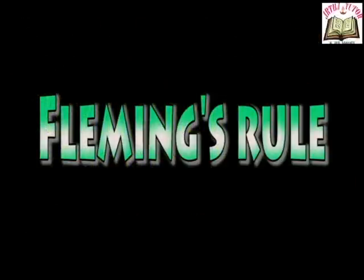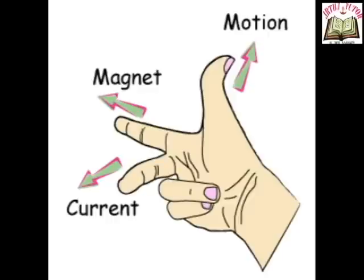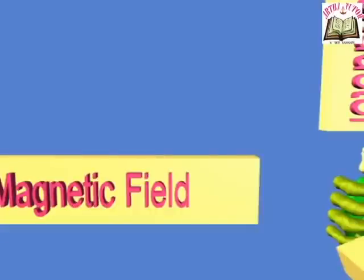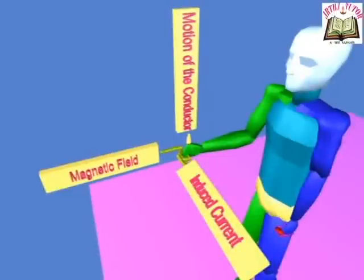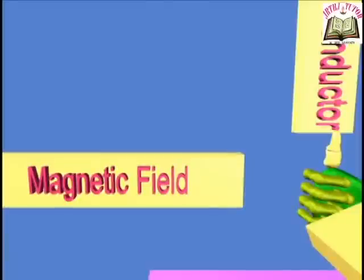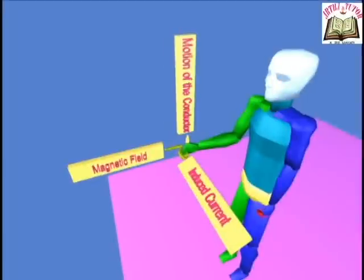Now let us deal about Fleming's rules. Fleming's right hand rule — it is also called the dynamo or generator rule. It gives the direct relationship between magnetic field, induced EMF and motion of the conductor. Arrange the thumb finger, forefinger and central finger of the right hand mutually perpendicular to each other. Then the thumb indicates the direction of motion of the conductor, the forefinger indicates direction of magnetic field, and the central finger indicates the direction of induced EMF.